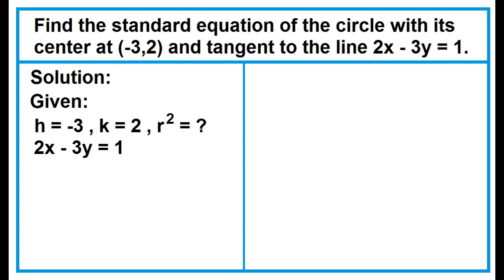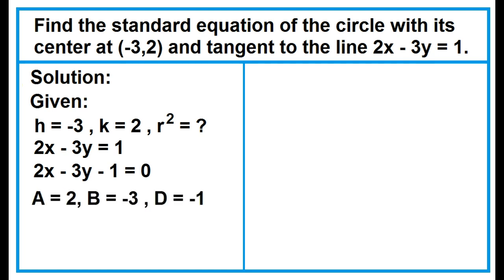The equation of the line tangent to the circle is 2x minus 3y equals 1, which can be written as 2x minus 3y minus 1 equals 0, where a equals 2, b equals negative 3, and d equals negative 1.